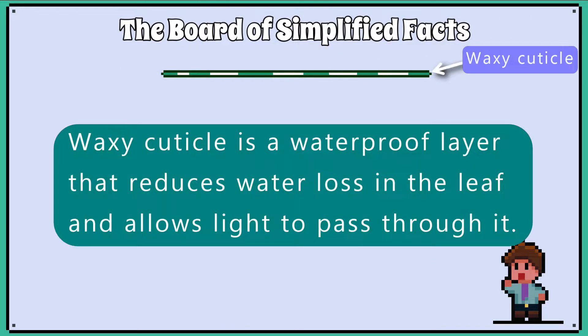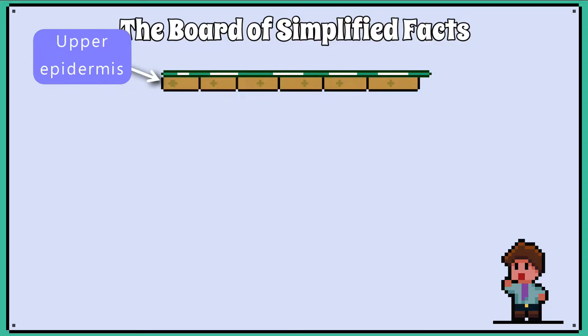Looking from the top we have a waxy cuticle. This helps reduce water loss in the plant and allows light to pass through it. Below that is the upper epidermis, which is a single layer of cells.